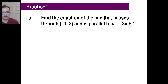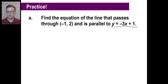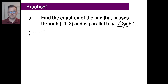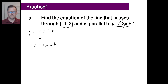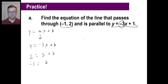Try part A — pause it and come back when you're finished. If it's parallel to that line, it has the same slope, which is negative 3. So write y equals mx plus b, where m is negative 3: y equals negative 3x plus b. Plug in the point (-1, 2): y is 2, negative 3 times negative 1 is 3, so 2 equals 3 plus b, meaning b equals negative 1. The whole equation becomes y equals negative 3x minus 1.